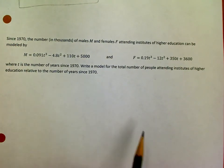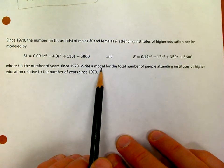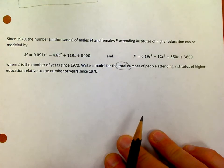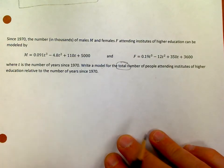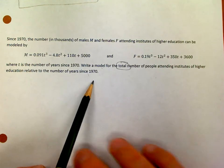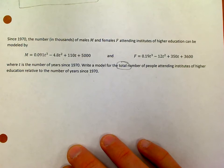Our question, our prompt here, is to write a model, that means an equation, write an equation that tells me the total number of people attending, and that's since 1970, right? So t is going to mean the same thing, but if I want to do total instead of splitting off male and female...